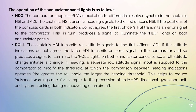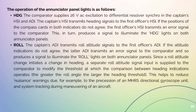The comparator supplies 26V AC excitation to differential resolver synchros in the captain's HSI and ADI. The captain's HSI transmits heading signals to the first officer's HSI. If the positions of the compass cards in both indicators do not agree, the first officer's HSI transmits an error signal to the comparator, which in turn produces a signal to illuminate the HDG lights on both initiator panels. For roll, the captain's ADI transmits roll attitude signals to the first officer's ADI. If the attitude indications do not agree, the first officer's ADI transmits an error to the comparator to illuminate the roll lights on both initiator panels. Since a roll attitude change initiates a change in heading, a separate roll attitude signal input is supplied to the comparator to modify the threshold at which the heading comparison operates — the greater the roll angle, the larger the heading threshold.